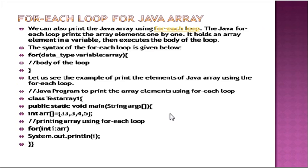The second method is the for-each loop for Java arrays. The for-each loop works similarly to a simple for loop but with some differences. We can also print a Java array using a for-each loop. The for-each loop prints array elements one by one — it holds each array element in a variable, then executes the body of the loop. The syntax is: for (datatype variable : arrayName) — each data element stored in the array is held in the variable.